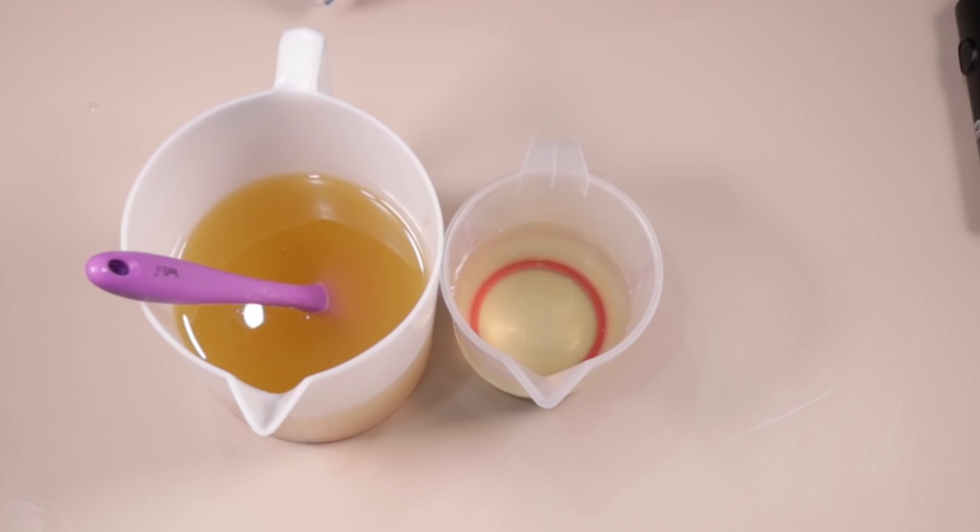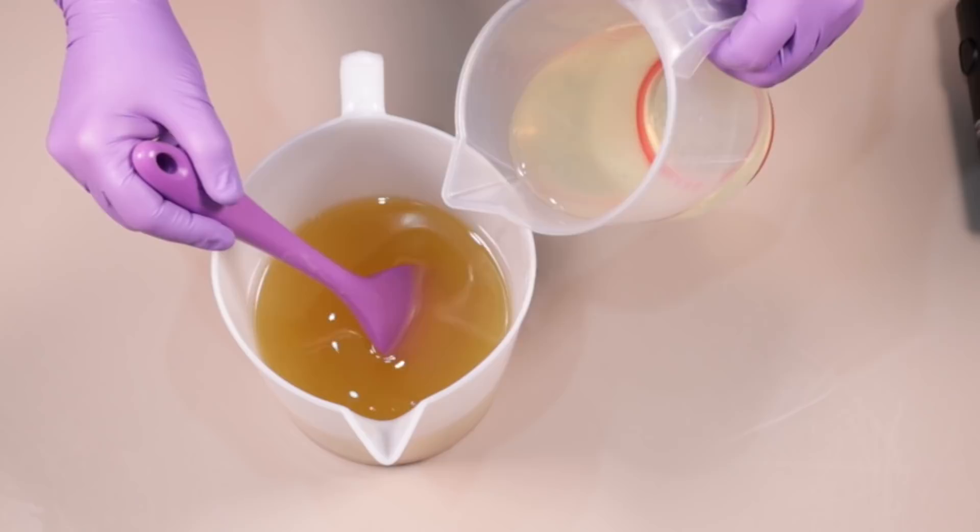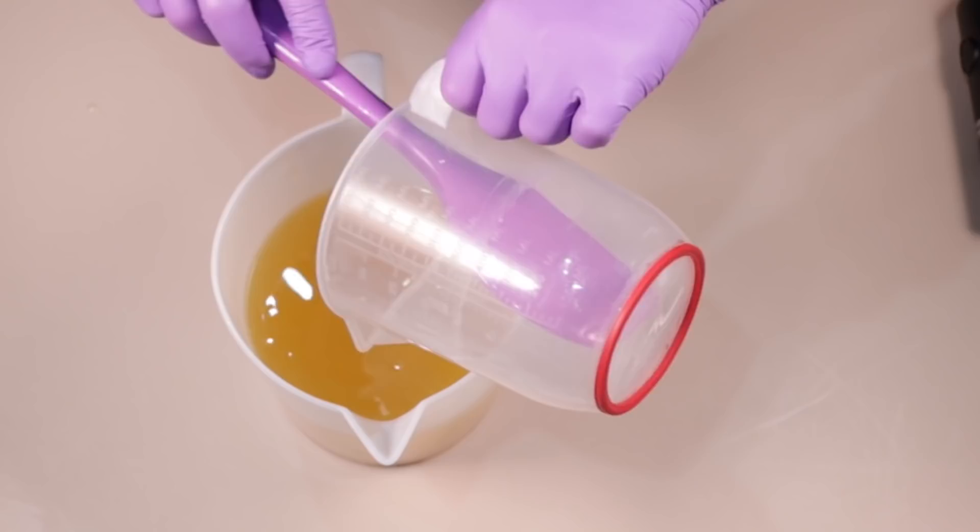In the original soap, Whitney did a wood grain technique and then piped her flowers on the top. I'm not actually doing a wood grain in mine just because I don't have the colors available to me in an assessment to actually make a wood grain soap, but I am going to do a thin line soap. What's the difference between a wood grain and a thin line soap? Well, basically nothing really.